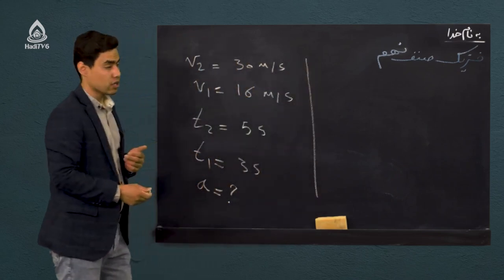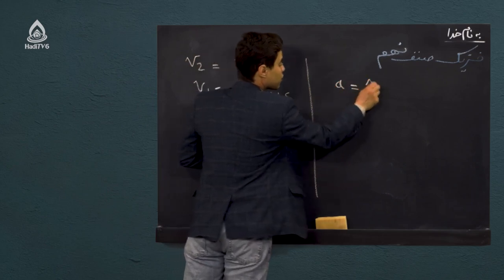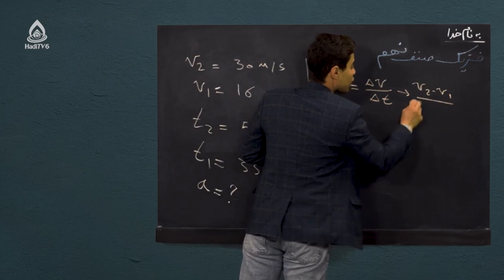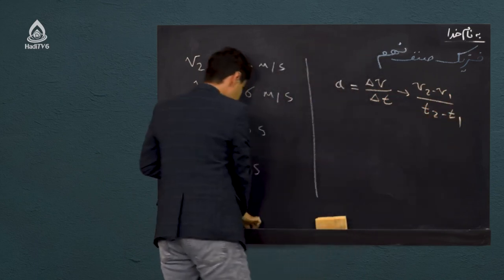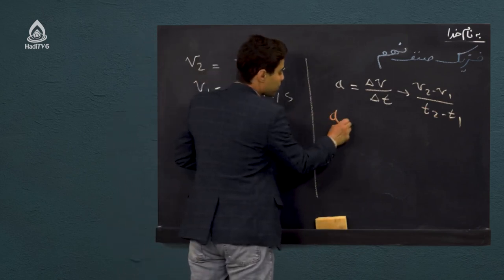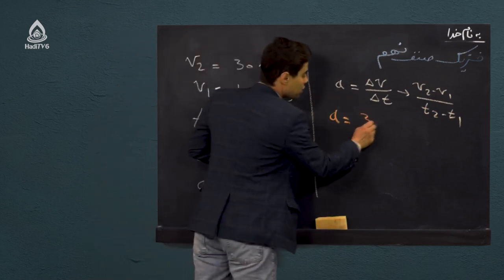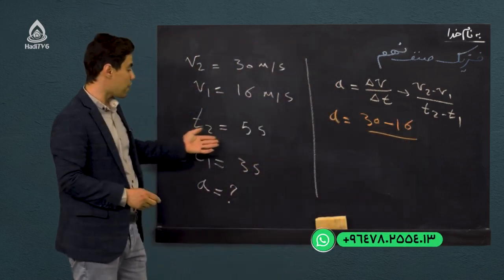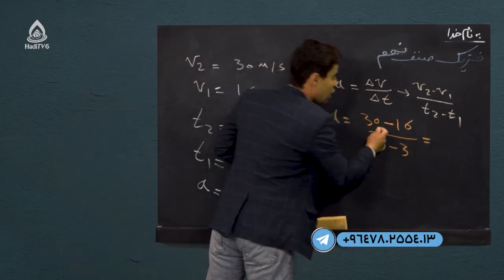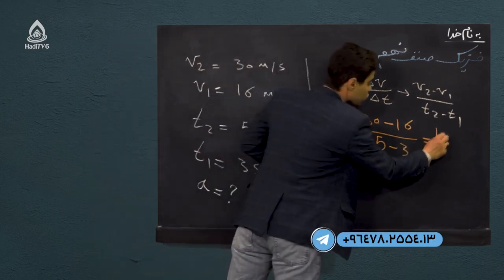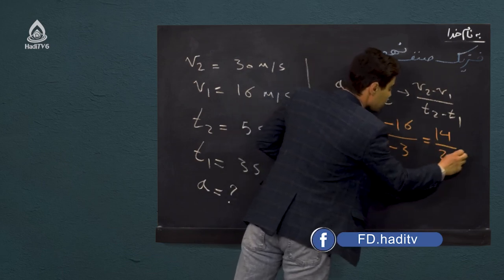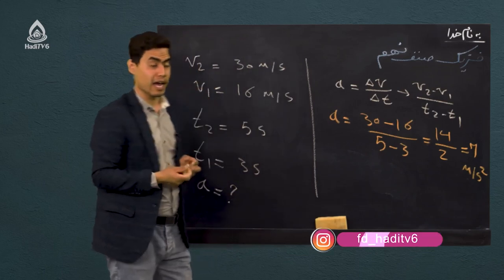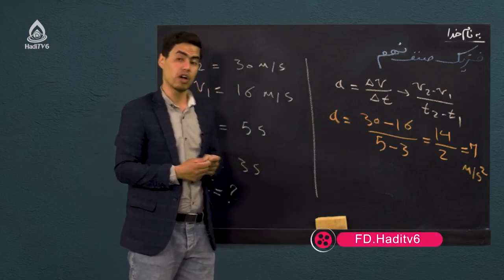فرمول شتاب چی بود؟ گفتیم که A مساوی میشه با ΔV بر ΔT. ΔV میشه V₂ منفی V₁ و ΔT هم T₂ منفی T₁. جایگزاری میکنیم: شتاب مجهول مساوی میشه با (۳۰ منفی ۱۶) بر (۵ منفی ۳). ۳۰ منفی ۱۶ برابر با ۱۴ میشه و ۵ منفی ۳ برابر با ۲ میشه. ۱۴ بر ۲ برابر با ۷ متر بر مربع ثانیه میشه. واحدش یادتان نره - وقتی که مسایل فیزیک حل میکنید حتماً واحد را در انتها بنویسید.